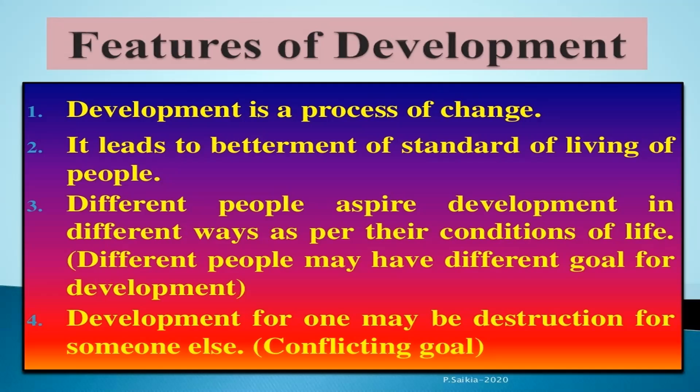You also need to fill in the developmental goals for a rural woman from a land-owning family, the urban unemployed youth, a boy from a rich urban family, and an Adivasi from the Narmada Valley. Fill all of these in the space provided in your textbook.